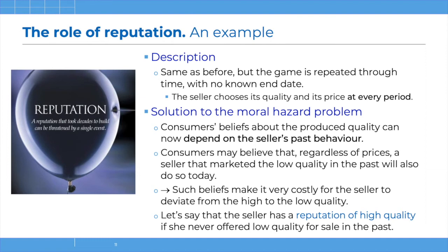Based on this kind of belief structure — which imposes a very large cost on the seller if she deviates from high quality — we can have sellers being disciplined in a sense, offering high quality in every period, and consumers believing they will continue to produce high quality. This illustrates the idea of a reputation that took decades to build but can be threatened by a single event. The fact that consumers know a single event can blow a seller's reputation — and the seller knowing this as well — may work towards a repeated equilibrium where high quality is offered period after period.